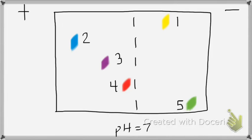Which of these proteins are positively charged? Proteins 1 and 5 — because they moved toward the negative end. Proteins 2, 3, and 4 are negatively charged. Out of 2, 3, and 4, protein 4 had an isoelectric point closest to the buffer, and protein 2 had one farthest from the buffer — so protein 2 moved the most.